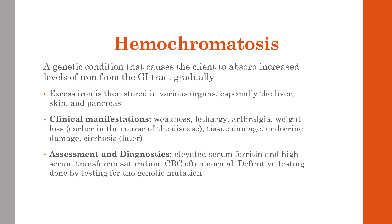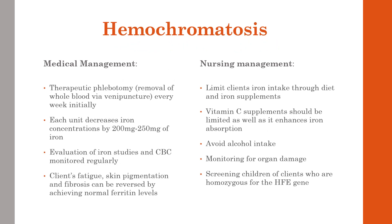Later-stage symptoms of hemochromatosis include cirrhosis, cardiac arrhythmias, cardiomyopathy with dyspnea and edema, hypothyroidism, diabetes, diminished libido, and impotence. Cirrhosis is common later due to increased iron deposits in the liver. Lab values show elevated serum ferritin and high transferrin, but the CBC is typically normal. Definitive testing is done for the genetic mutation.